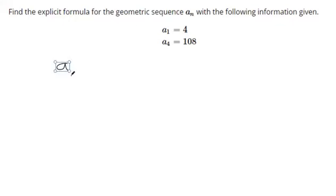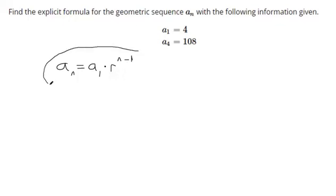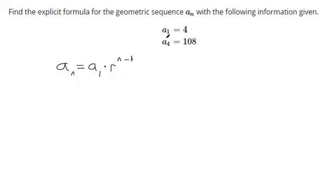Any geometric formula can be written like this: a sub 1 times the common ratio to the n minus 1 power. All this does is help us multiply by that common ratio a certain number of times. So this is the general form for a geometric sequence. We know a sub 1 is 4, but we don't know what the common ratio r is yet.